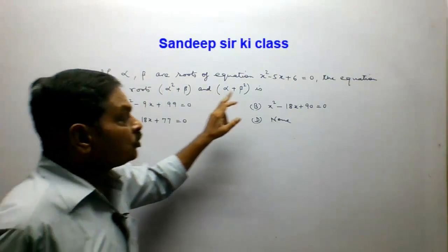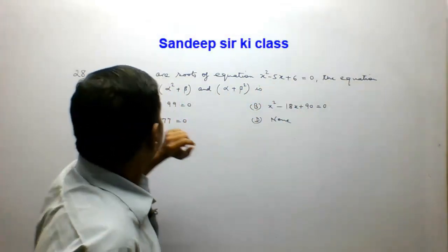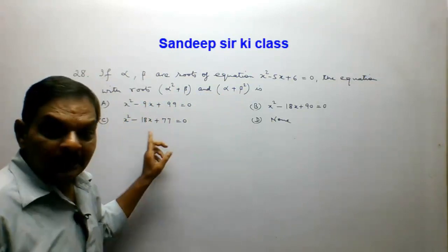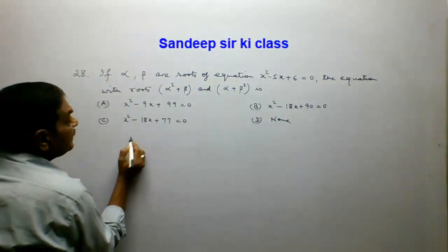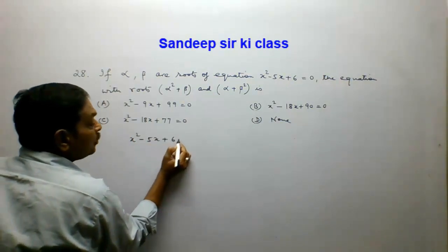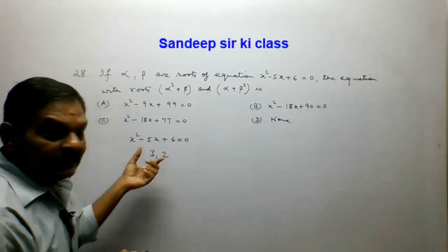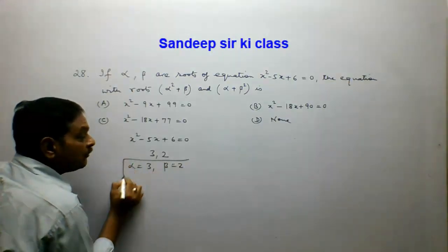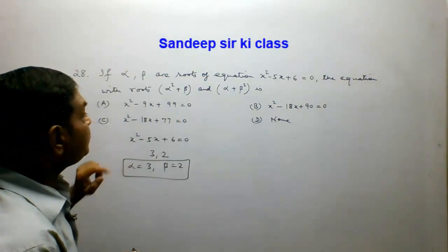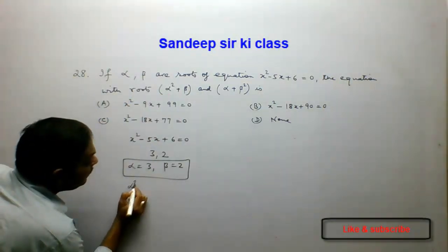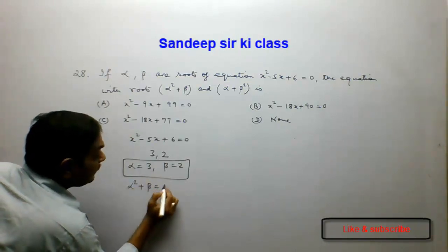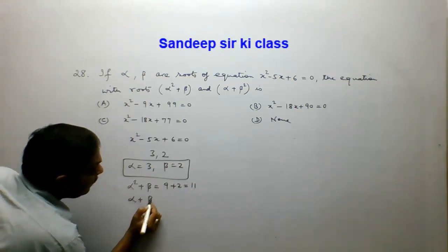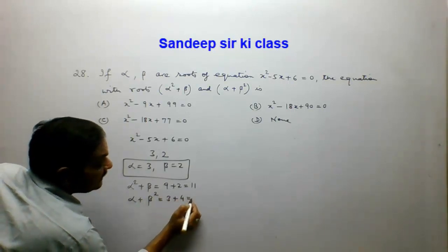Question 29. If alpha and beta are the roots of x squared minus 5x plus 6 equals 0, the equation with roots alpha squared plus beta and alpha plus beta squared is required. We have seen that x squared minus 5x plus 6 equals 0 has roots 3 and 2. So alpha equals 3 and beta equals 2. Therefore alpha squared plus beta equals 9 plus 2 equals 11, and alpha plus beta squared equals 3 plus 4 equals 7.